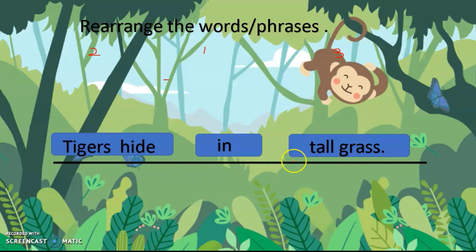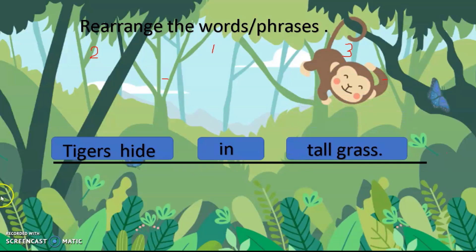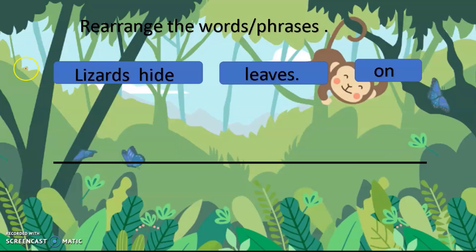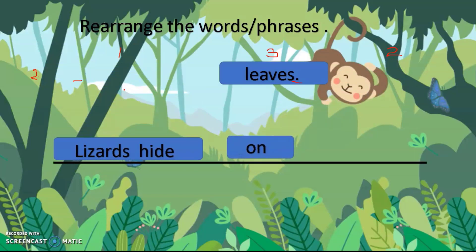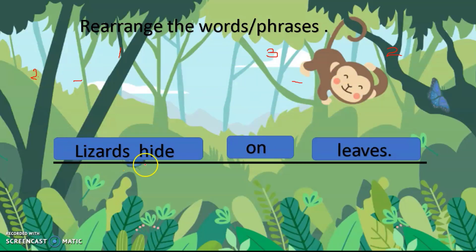Now number two: 'lizards hide on leaves.' The first word should be the one with a capital letter, so 'lizards hide' is number one. Next should be the preposition 'on,' then the last one — with the full stop — is number three. Lizards hide on leaves.